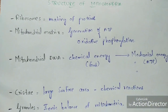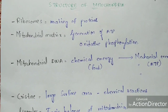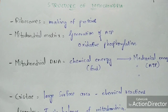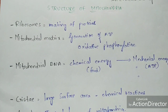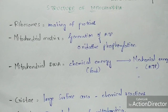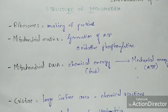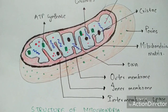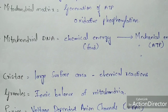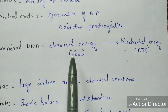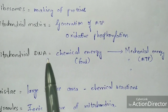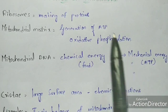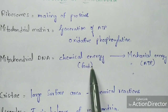The ribosomes present in the mitochondrial matrix mainly help in the making of proteins. The mitochondrial matrix is the site where ATP generation takes place by the oxidative phosphorylation process, where the proton gradient plays a major role. Mitochondrial DNA mainly helps in the conversion of chemical energy — produced from the food we consume — to mechanical energy, and that chemical energy enters the mitochondria through the porines.